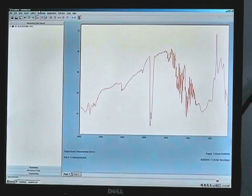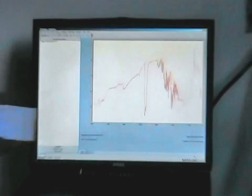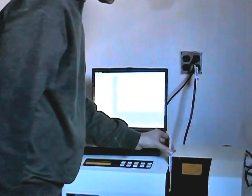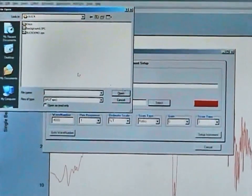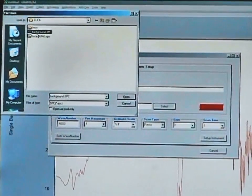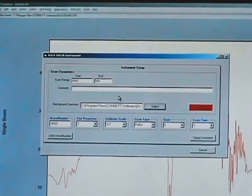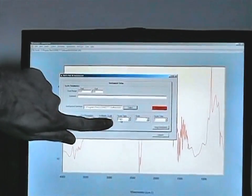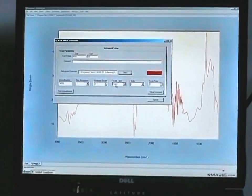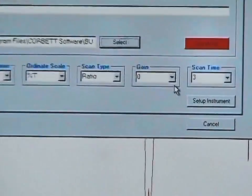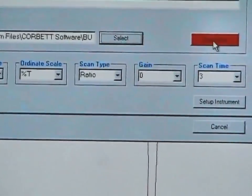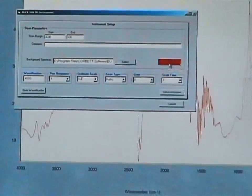Now if you want to run our polystyrene card sample as a reference, insert that into the holder, return to the GRAMS menu, select Collect, Instrument Setup, and now use the browser screen to select your background file which we had just run and put that in memory. We can now see that we're in the ratio mode for scan.